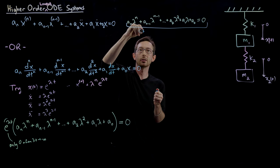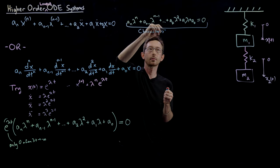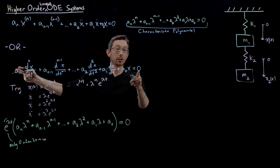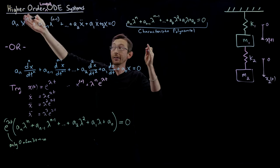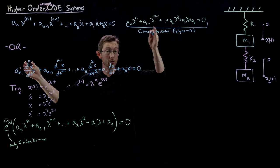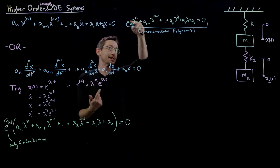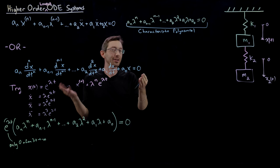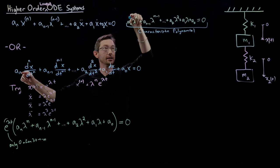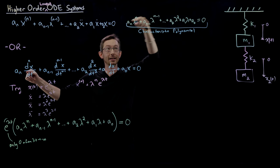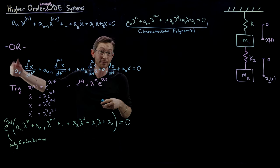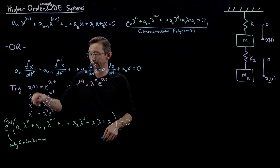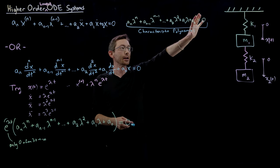This is the characteristic polynomial for this differential equation. Every linear ordinary differential equation has its own characteristic polynomial. And it's nice — the polynomial is easy to read off because the coefficient of the nth power of λ is just the coefficient of the nth derivative of x in the ODE. That makes sense based on the structure of all these derivatives having powers of λ.